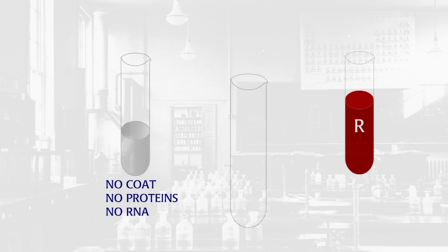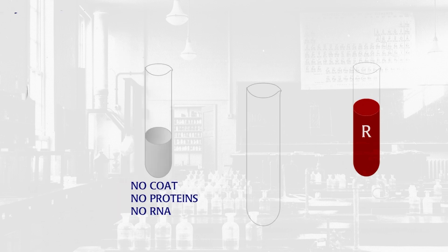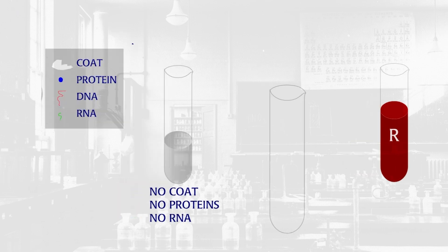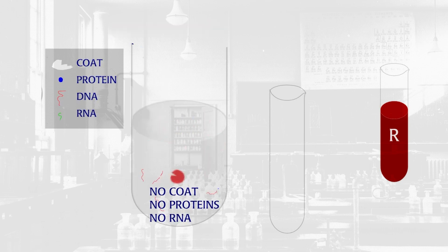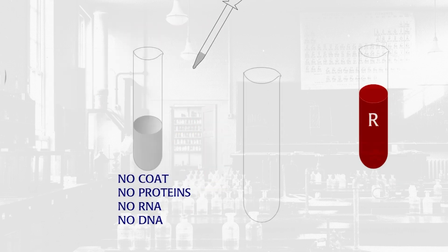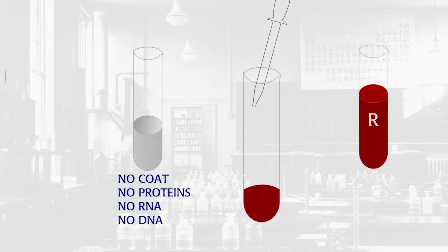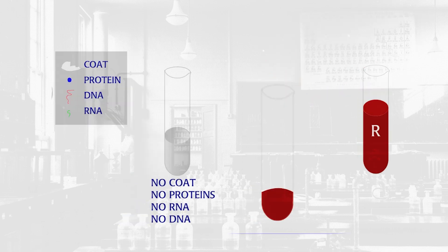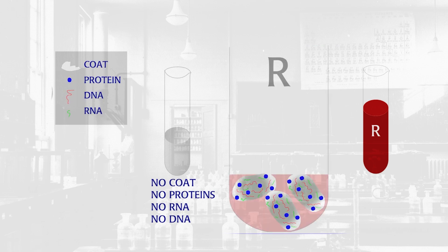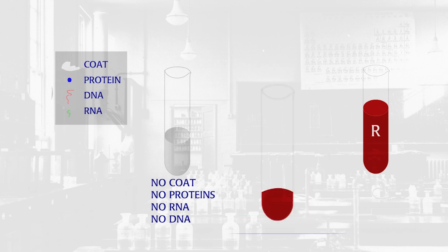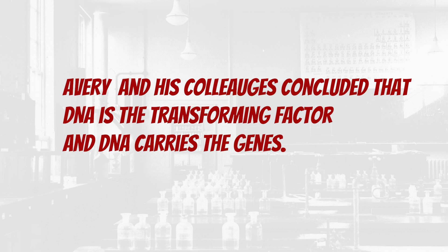What they had left in the lysates was virtually pure DNA. As a final test, they incubated the solution with the DNA-digesting enzyme DNase. Then they used this solution to test for transforming ability. The solution was unable to transform. Avery and his colleagues concluded that DNA is the transforming principle. They published these results in 1944.